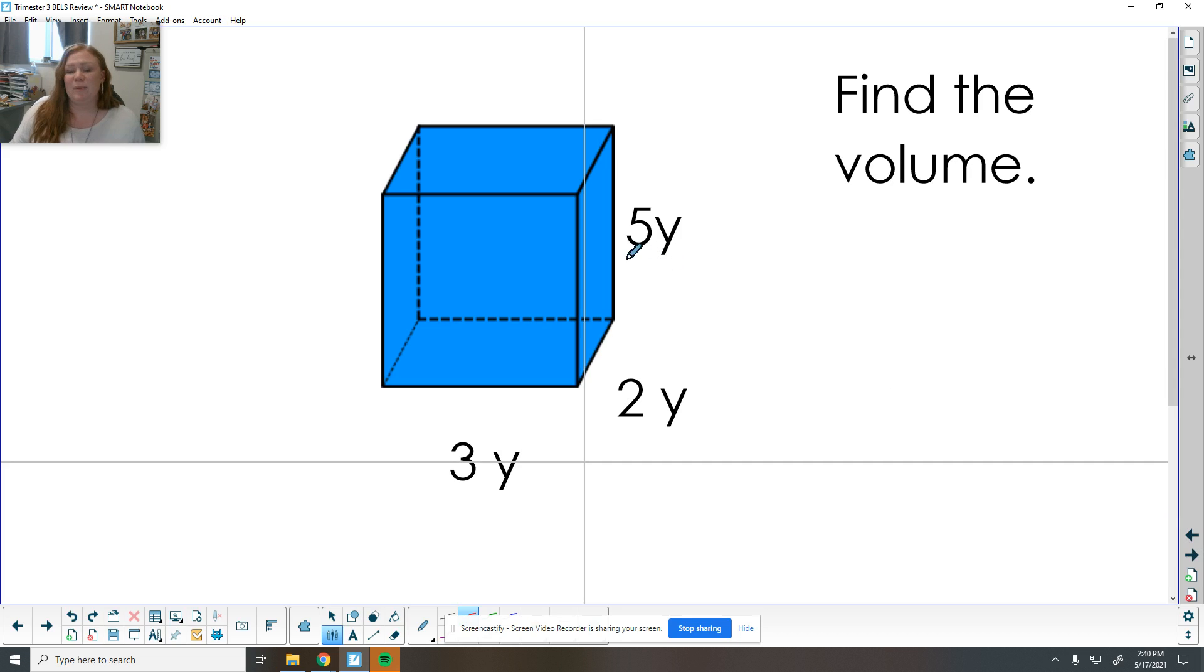A few volume problems. So volume of cubes and rectangles is length times width times height. So the length is three. The width is two. The height is five. So three times two is six times five is 30 yards cubed. Cause we did three dimensions, length, width, height. We're seeing how many cubes go inside of that.